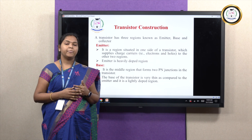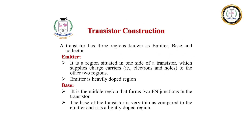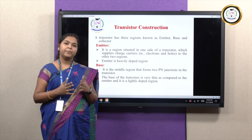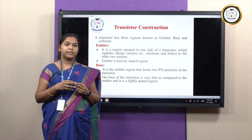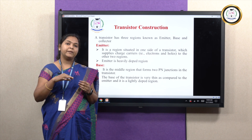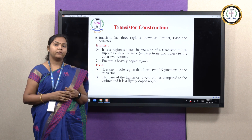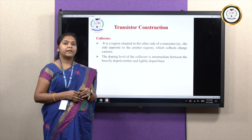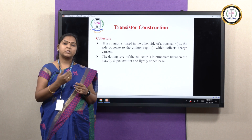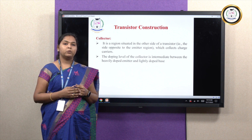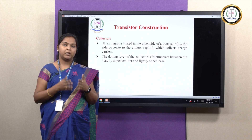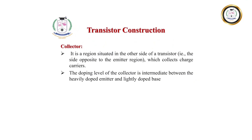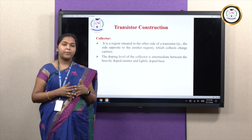The second region is the base region, situated at the middle portion, in between the emitter as well as the collector. It acts as a pathway or channel between the emitter and the collector, carrying all the charge carriers emitted by the emitter region through the base region. The doping level of the base region seems to be very, very lightly doped. The third region is the collector region. As the name indicates, it keeps on collecting all the charge carriers emitted by the emitter region. It is located straight opposite to the emitter region, and the doping level is neither too heavy nor too light — a moderate level of doping is maintained in the collector region.